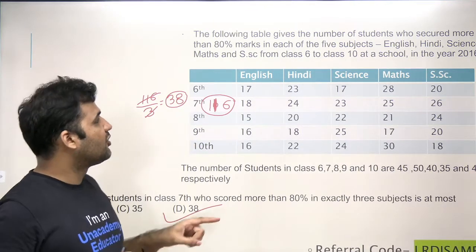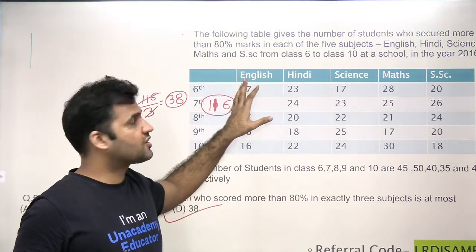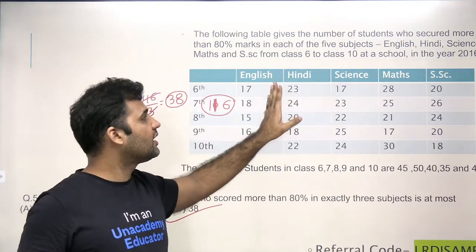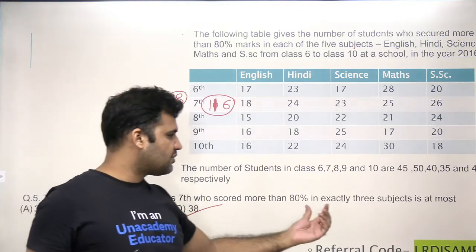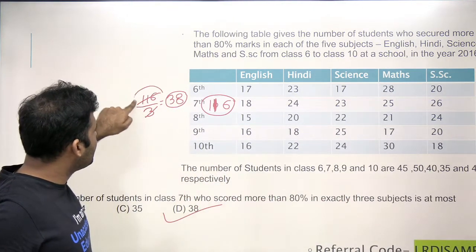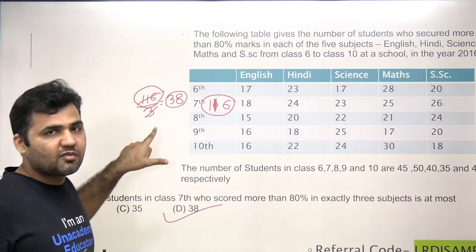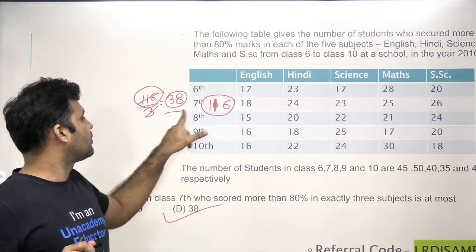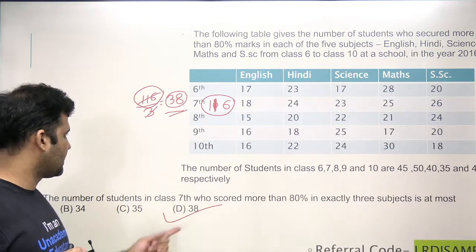Why didn't division work for the five-subject case? Because for five subjects, there is only one possible combination — 5C5 = 1. But for three subjects, there are ten possible combinations (5C3 = 10). So here, to maximize the number of students getting more than 80% in exactly three subjects, we distribute all prizes by giving three prizes per student, giving a maximum of 38 students. This is option D — the answer to the question.